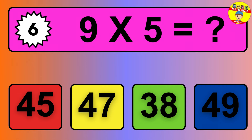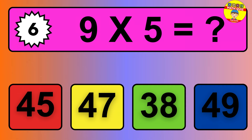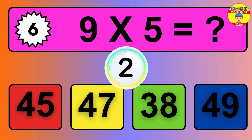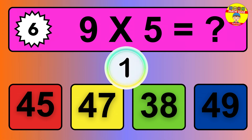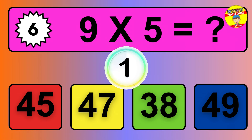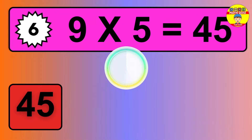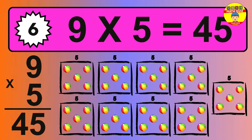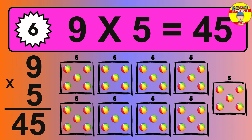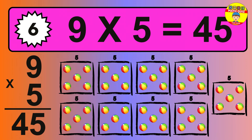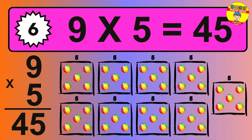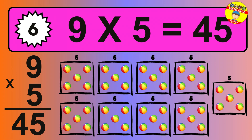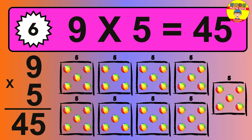Question 6. 9 times 5 equals what? The answer is 9 times 5 is 45. To calculate, we have 9 groups with 5 balls each one. So how many balls do we have? 45 balls.